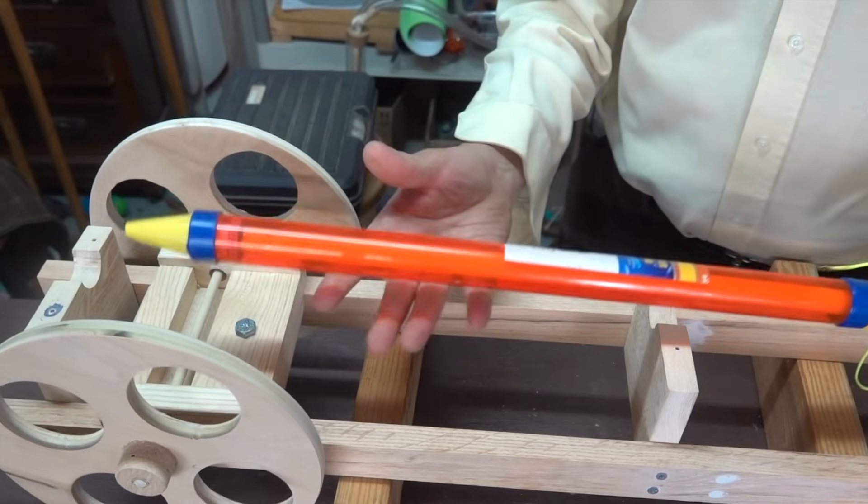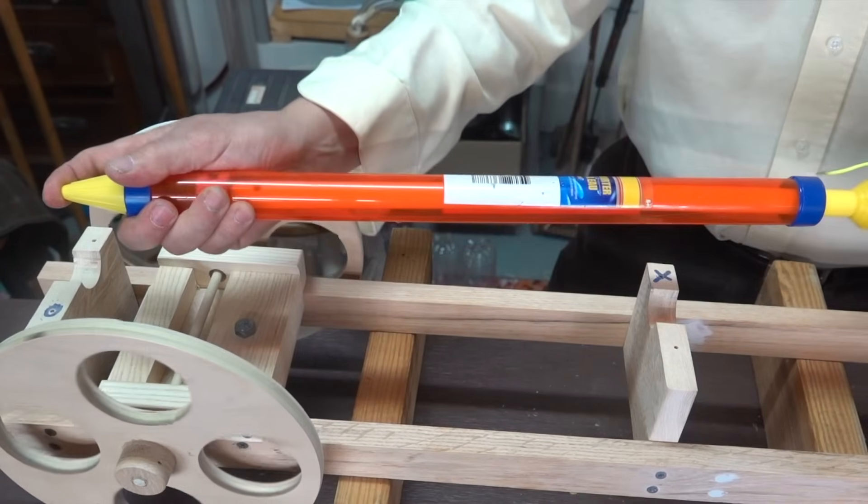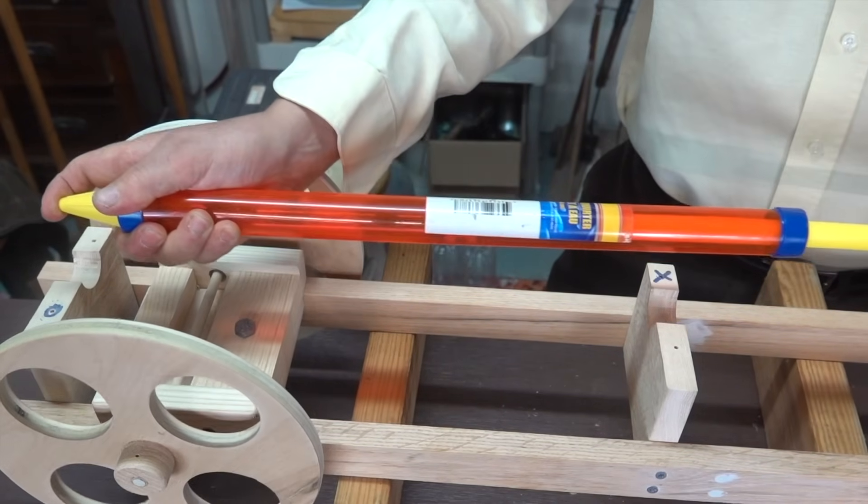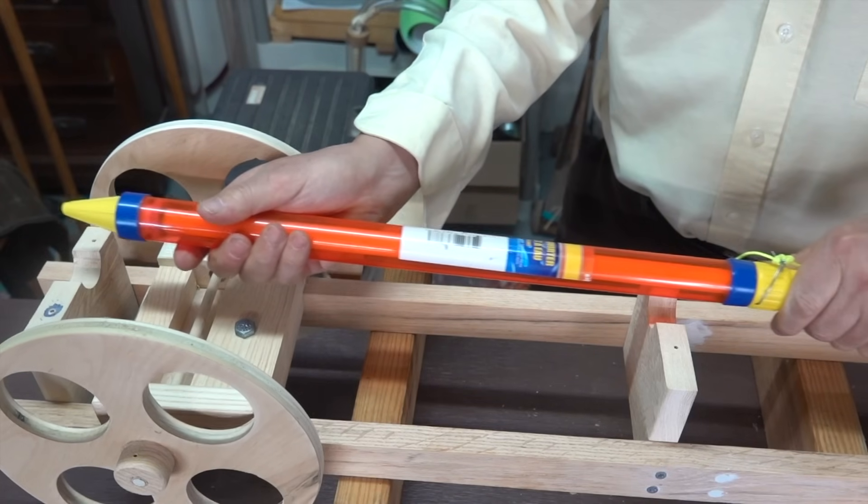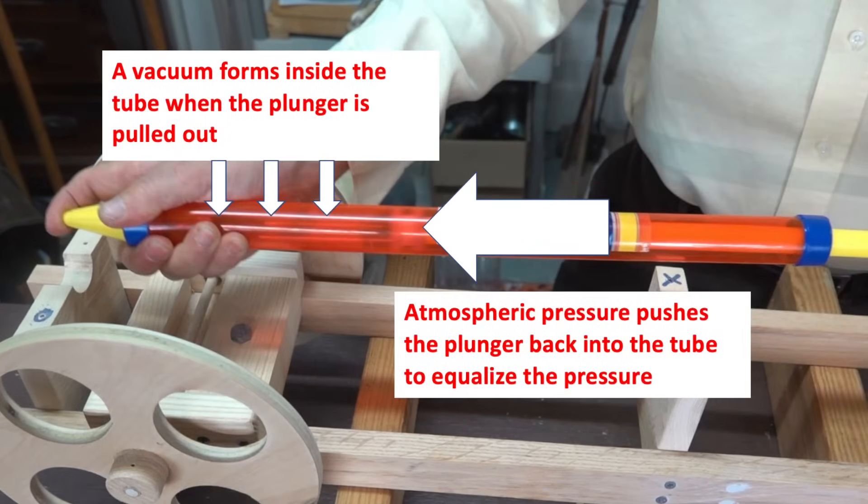The potential energy to drive the car is actually the result of creating a vacuum or empty space inside that tube when I pull back the plunger. The atmosphere tries to push that plunger back in again with a pressure equal to about 14.7 pounds per square inch.